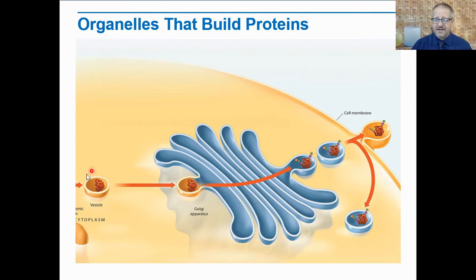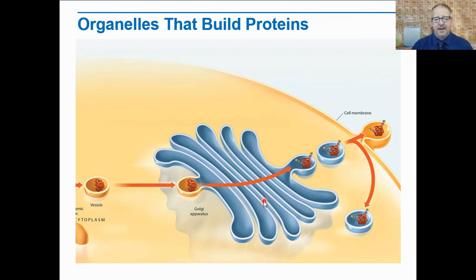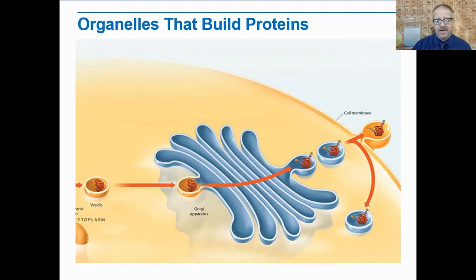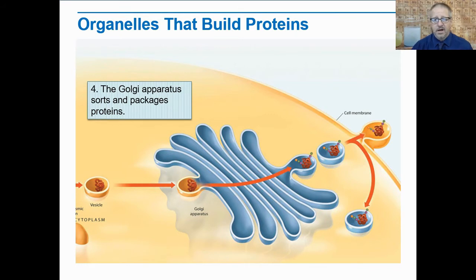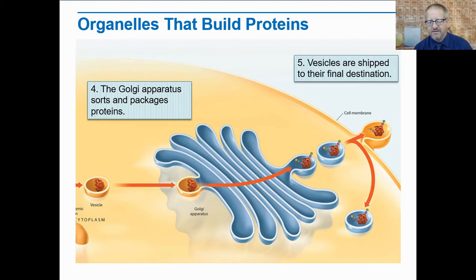Here we have the vesicle from the previous illustration moving towards the Golgi apparatus. The vesicle will fuse with the Golgi apparatus, and the Golgi apparatus will then modify, sort, or package the proteins and other materials — or do all of those things. All of these materials are coming from the ER, the endoplasmic reticulum. The Golgi apparatus sorts and packages the proteins, and then those proteins are put into a new vesicle and shipped to their final destination — either inside the cell or outside of it.